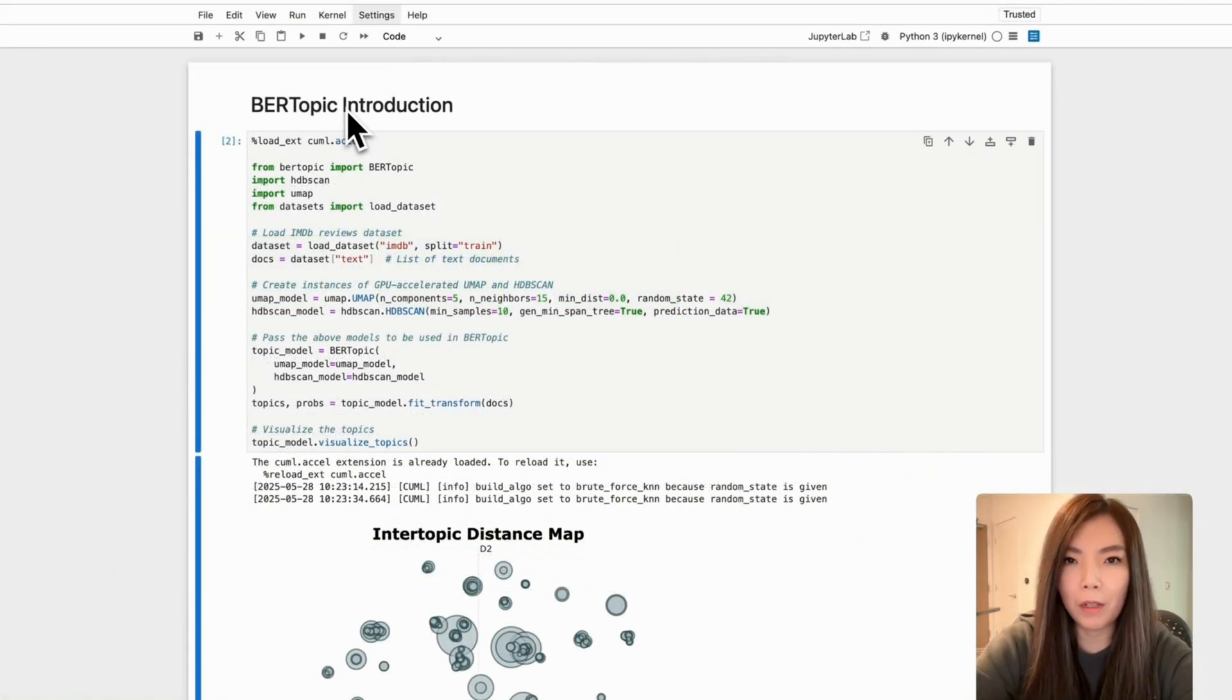BERTopic takes in the two instances and will generate interpretable topics and visualizations from the clusters. Let's look at the BERTopic coding together by leveraging an example. In this example, we demonstrate how to use BERTopic for topic modeling on the IMDB movie review dataset. We start by loading the dataset with the datasets library and extract the text reviews.